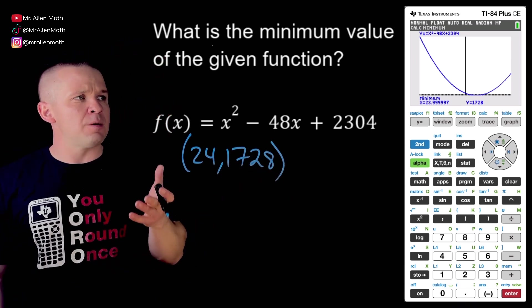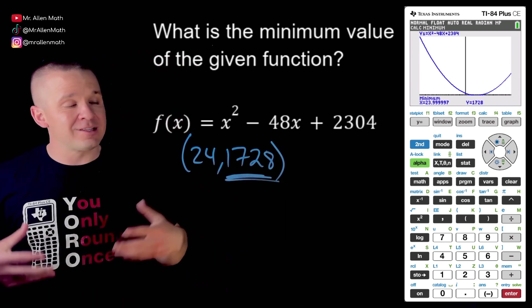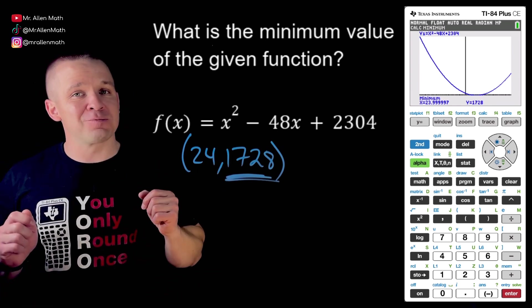Now it's asking so let's write down this ordered pair here. It says 24 comma and then we have 1728. What is it asking for here? What's the minimum value? The minimum value is my y value so that's the answer you're going to want to type in there and move on to the next problem because you just crushed it and you got it right. Awesome. All right next problem.